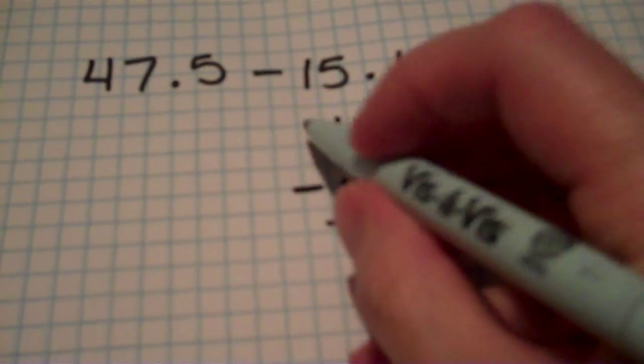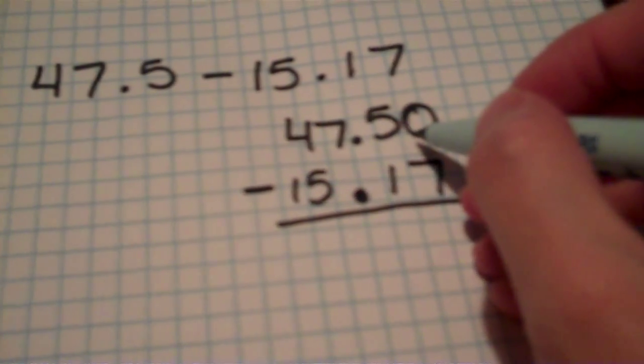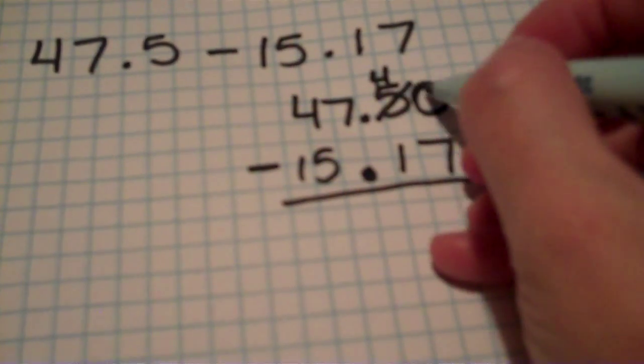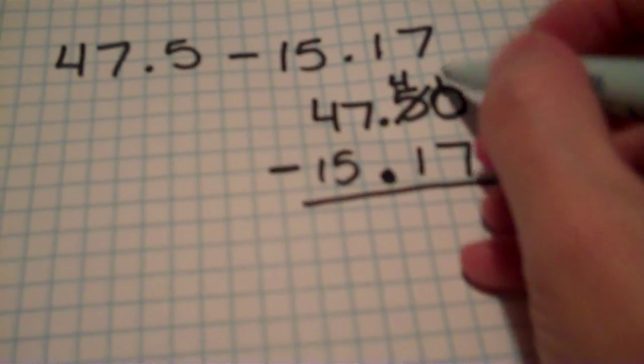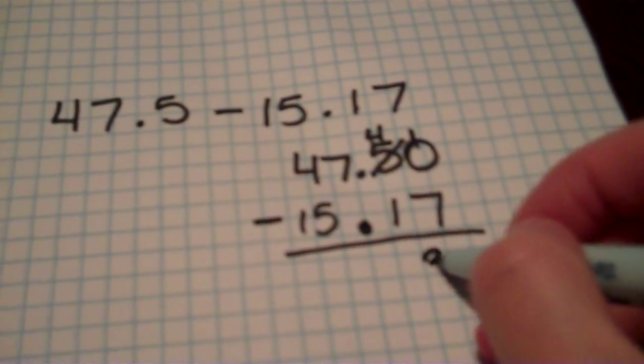Now, I am subtracting this time. So I've got 7 from 0. Well, I can't do that. So I'm going to borrow from the 5, making it a 4. I'm going to give that 10 to the 0. So 7 from 10 gives me 3.